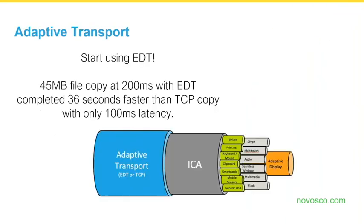Adaptive Transport — if you've used it, great. If not, you should seriously consider it. It was released in 7.13 and above, and in 7.16 XenApp and XenDesktop it's enabled by default. In a test I ran, a 45 MB copy over 200 milliseconds of latency completed 36 seconds faster than a TCP copy with only 100 milliseconds of latency. Adaptive Transport transfers the ICA protocol over UDP instead of the historical TCP. While TCP is still an option, the preferred route — especially on latent connections — is UDP, as it gets your data to and from the destination quicker.